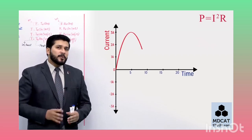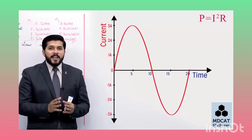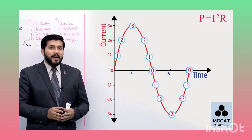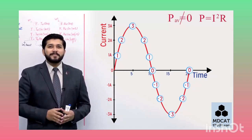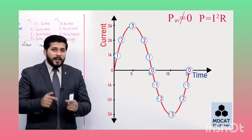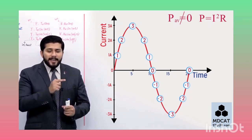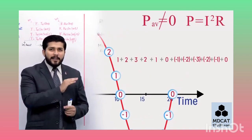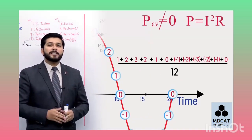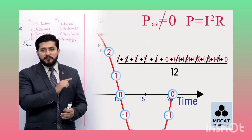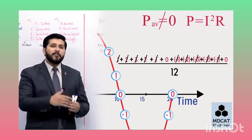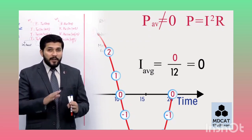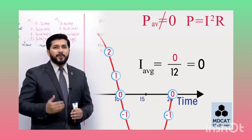آئیے واپس cycle کی طرف چلتے ہیں۔ Average power zero نہیں آ رہی حالانکہ average current zero تھا۔ Average current zero کیوں تھا؟ کیونکہ positive values اور negative values cancel ہو جاتی تھیں۔ لیکن average value of power zero کیوں نہیں؟ آئیے دیکھتے ہیں - average power نکالنے کے لیے ہر point پر power find out کریں۔